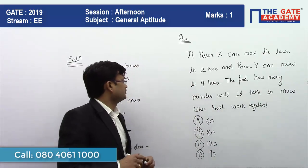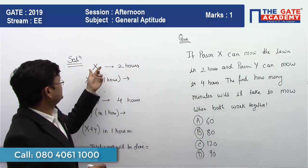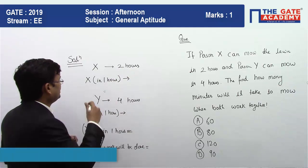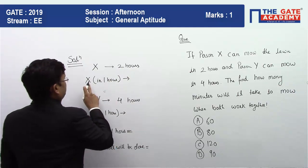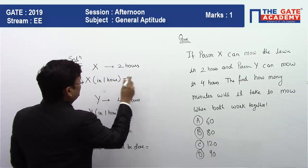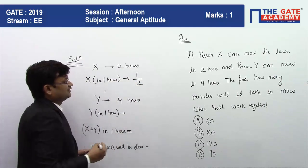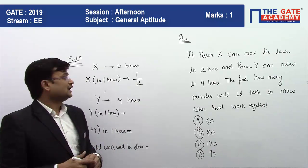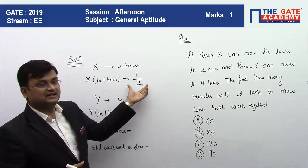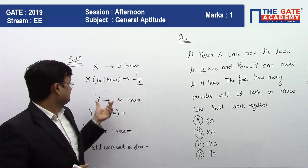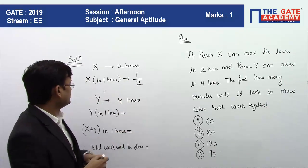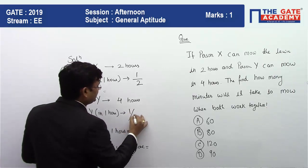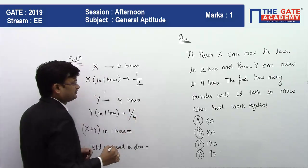Now, X takes two hours to finish the work, so in one hour X will finish one-half of the work. For Y, it is four hours, which means in one hour only one-quarter — 25% — of the work will get done. These are the individual parts of work completed in one hour.